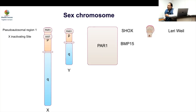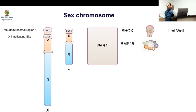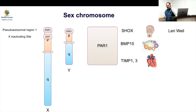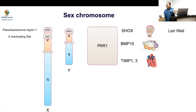The second important gene is BMP15 — bone morphogenetic protein — which plays a very important role in ovarian development. There is also the TMP region, which is important for cardiac development. So we can now understand why Turner syndrome, as originally described, presented with short stature, ovarian problems, and cardiac problems — all before the genetic diagnosis was available.